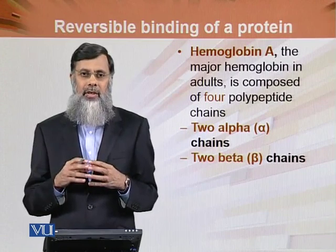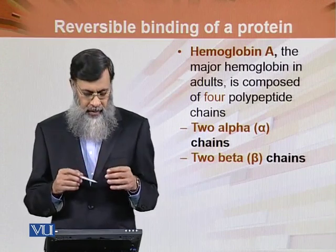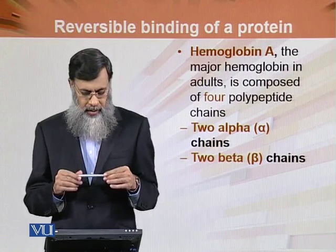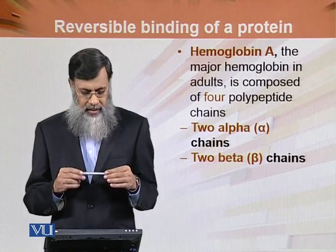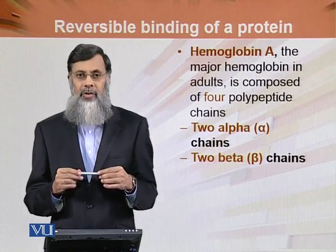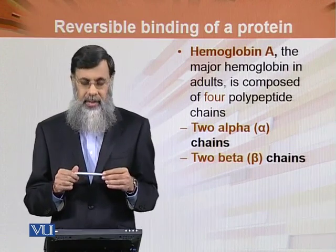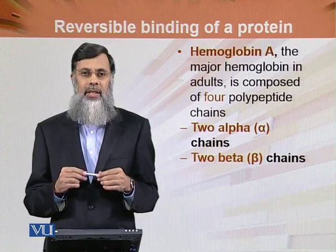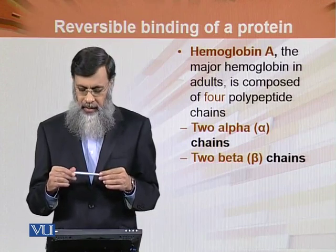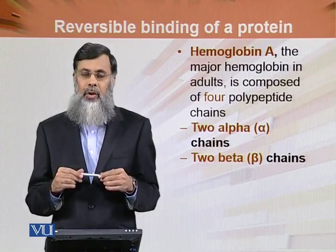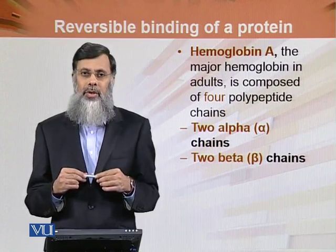In fetal hemoglobin, HbF, there are two alpha chains and two gamma chains.